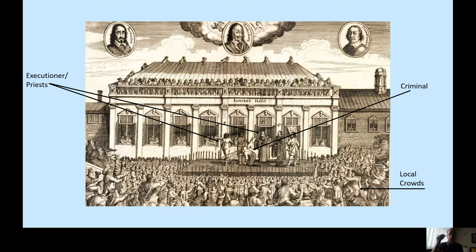Foucault argues that in this period, punishment has to be a spectacle — it has to be seen to be working. The king has to be seen to be enacting his will and his laws, and there have to be consequences for breaking the king's law. It also demonstrates to the audience what those consequences are if you break the laws of the monarch. You need a spectacle to maintain the power of the king and show the power he holds over society. This is how they maintain order and control.